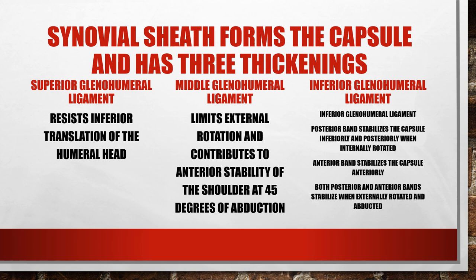The superior glenohumeral ligament resists inferior translation of the humeral head — meaning it prevents the humeral head from sliding straight down. This is important clinically; you can see that with upper motor neuron lesions where the shoulder completely comes out of the joint. This ligament helps check that movement.